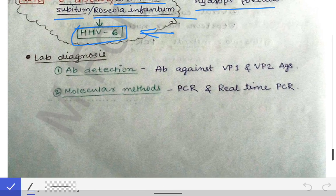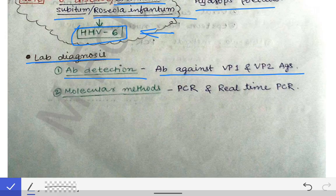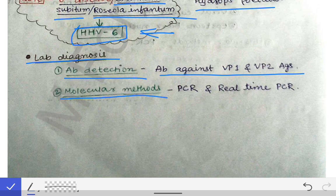For lab diagnosis, we can do antibody detection in the blood — specifically antibodies against the VP1 and VP2 antigens of the parvovirus. When parvovirus enters the body, the immune system produces antibodies against VP1 and VP2 antigens. If those antibodies are detected in the blood, that indicates infection with parvovirus B19. We can also use molecular methods such as PCR and real-time PCR for diagnosis.